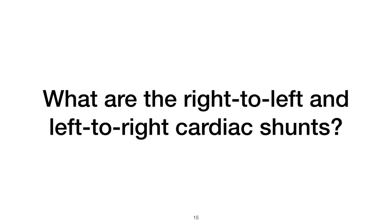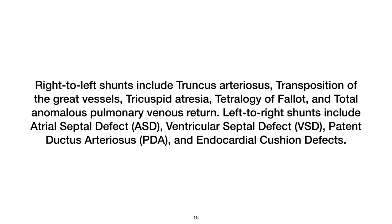What are the right-to-left and left-to-right cardiac shunts? Right-to-left shunts include truncus arteriosus, transposition of the great vessels, tricuspid atresia, tetralogy of Fallot, and total anomalous pulmonary venous return. Left-to-right shunts include atrial septal defect (ASD), ventricular septal defect (VSD), patent ductus arteriosus (PDA), and endocardial cushion defects.